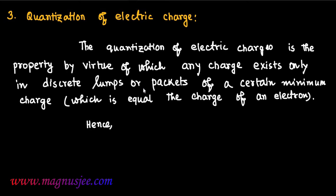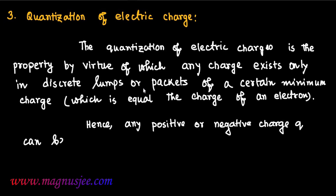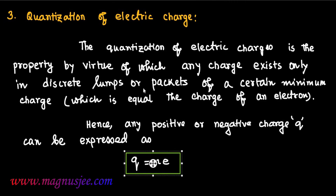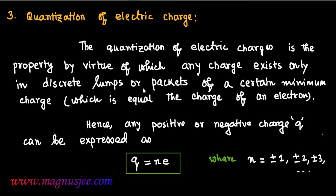Hence, any positive or negative charge Q can be expressed as Q equal Ne, where Q is the charge, N is an integer where N equals plus or minus 1, plus or minus 2, plus or minus 3, and so on, and small e is the charge of an electron.